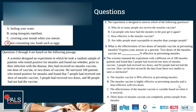The experiment is designed to answer which of the following questions? Why do so many people not receive the measles vaccine? Can people who have had measles get it again? How effective is the measles vaccine? Or are older people more susceptible to measles than younger people? The correct answer is C: how effective is the measles vaccine? With the information provided, we can answer this question to some extent.